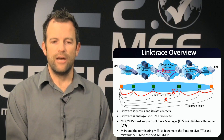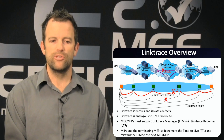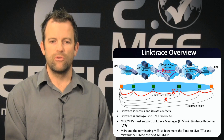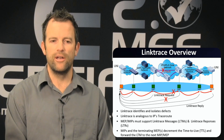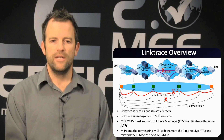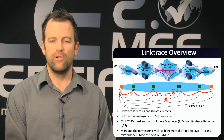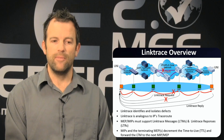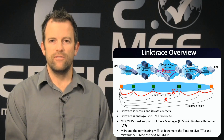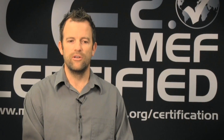MIPs in the network must support the LTM request and LTR response. When the MIPs receive the link trace request, they decrement the time to live and forward the message on. In this case, when the fault is encountered, the link trace reply will not go back to the originating MEP, and therefore the MEP identifies where the fault condition has occurred.